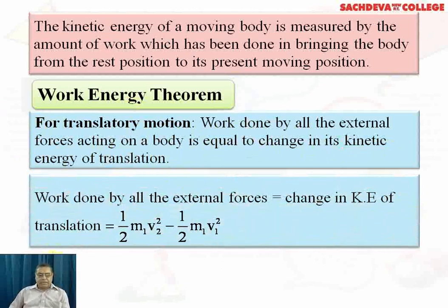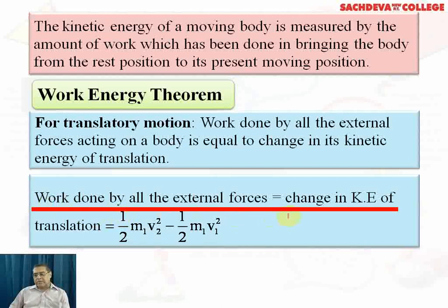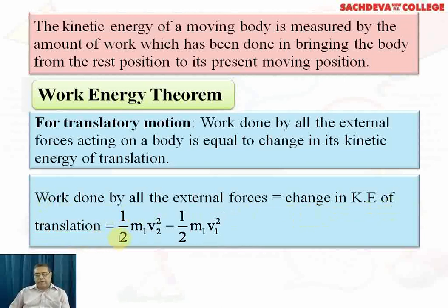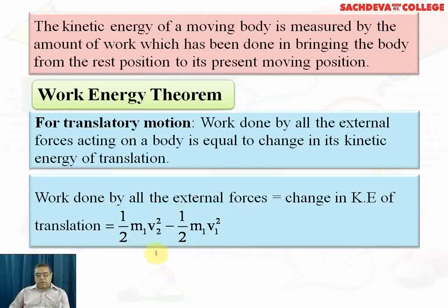Work done by all external forces equals the change in kinetic energy of translation. So we write: W = half m·v₂² minus half m·v₁², where m₁ indicates that mass remains constant. Taking half m common, this becomes W = half m(v₂² − v₁²), where v₁ is the initial velocity and v₂ is the final velocity.